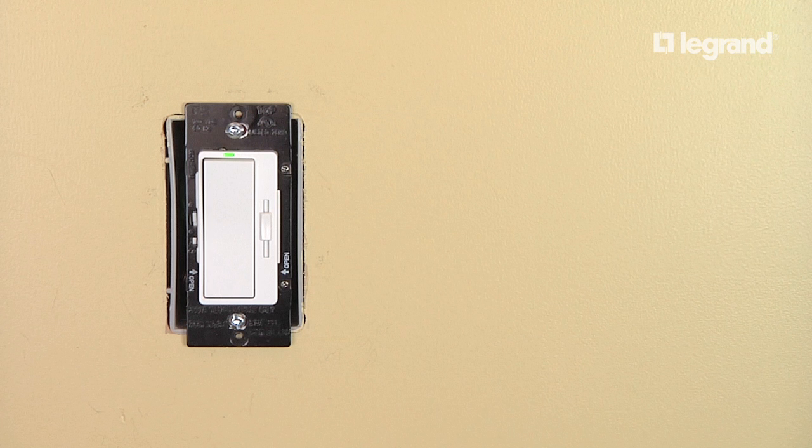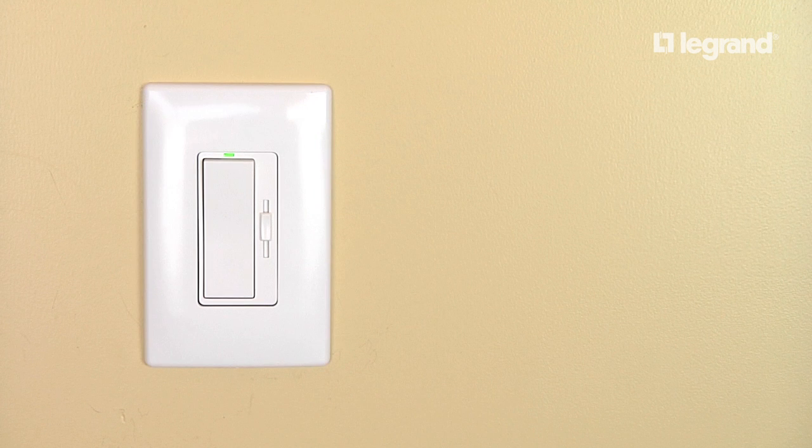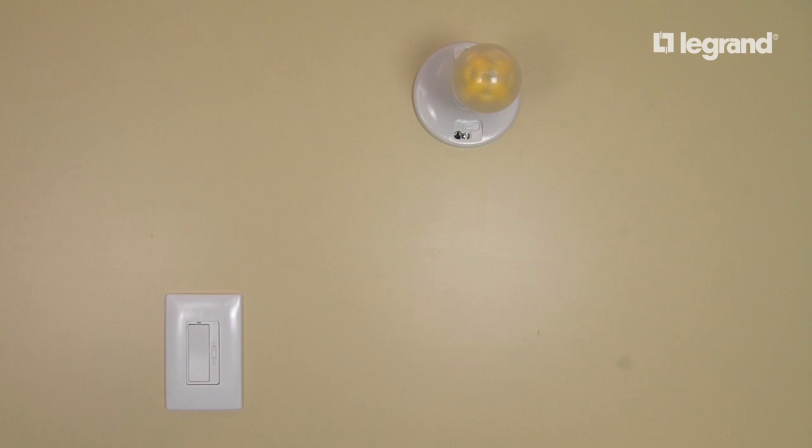The Harmony True Universal Dimmer should be installed following the instructions included with the dimmer. When correctly installed and connected to a lighting load, the Harmony True Universal Dimmer will automatically perform a minimum trim level sequence when power is applied to the dimmer and the dimmer is turned on.